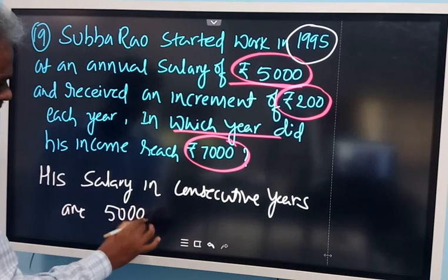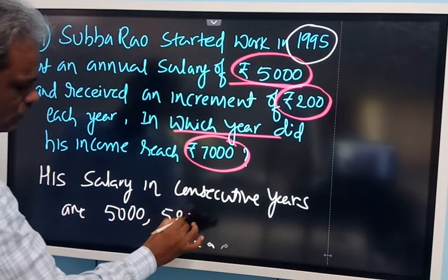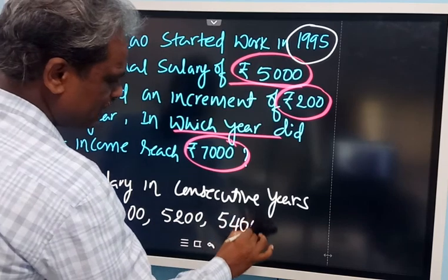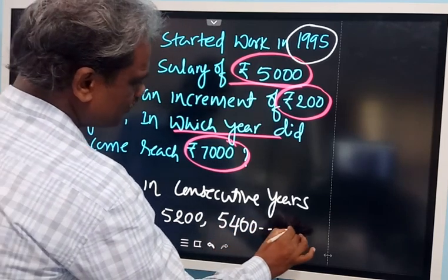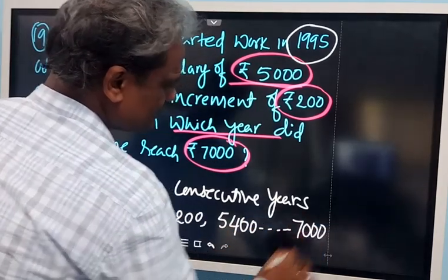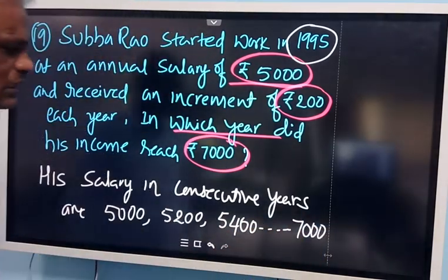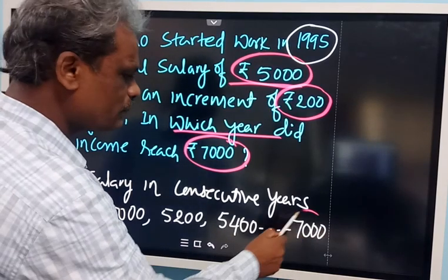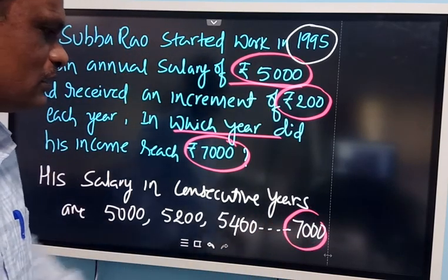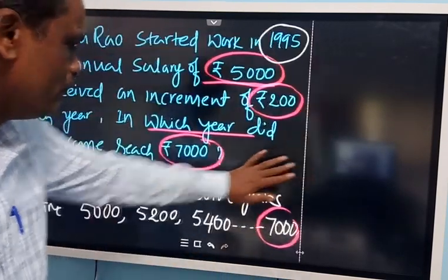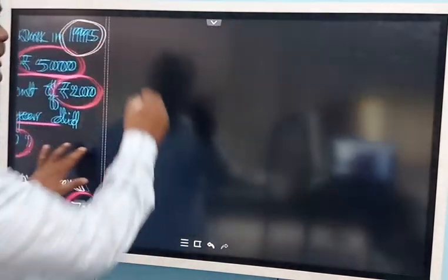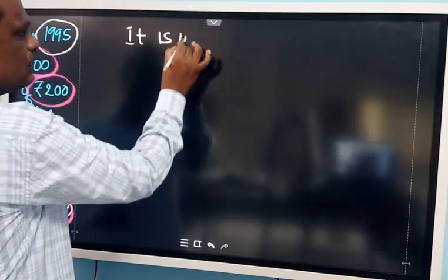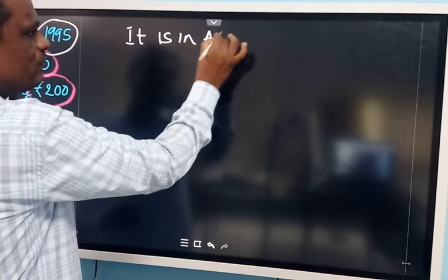Rs. 5000 in the first year, then 5200 in the second year, then 5400, and at the end he gets 7000. So now in which year does he get Rs. 7000 — that is the question mark. These numbers are in AP — arithmetic progression.